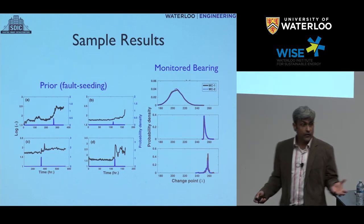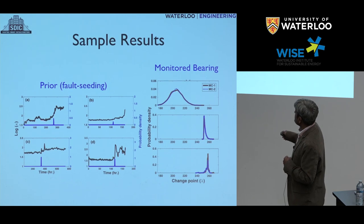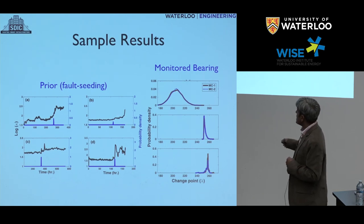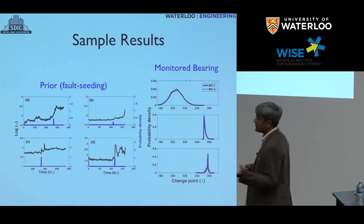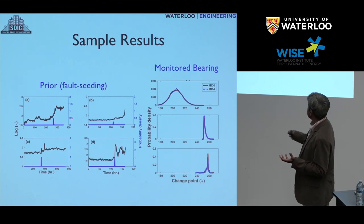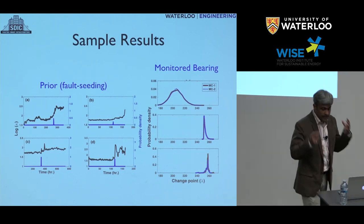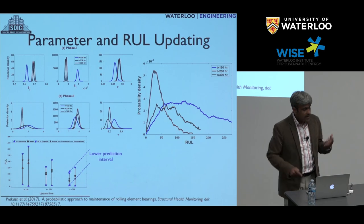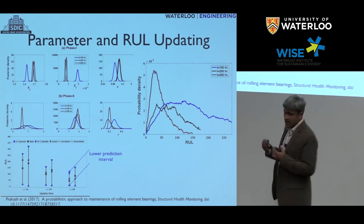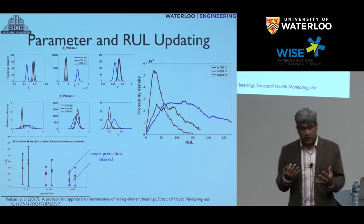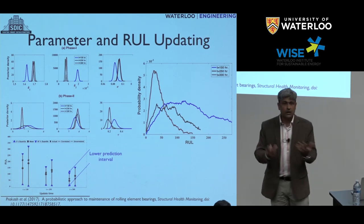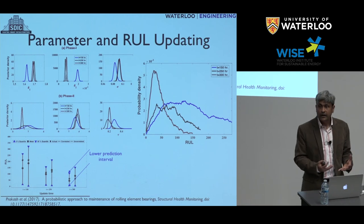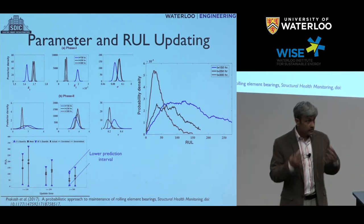We have an automated way to select which portions of the data contain damage-sensitive features, and from those features we can now do fault modeling. This is our environment model — how it looks from those features. Once you have a feature-based environment model established, you can parameterize these models using random variable models, stochastic gamma process models, Wiener process models, and so on. Once you have parameterized these things, you use those parameter estimates to calculate the remaining useful life. We have looked at correlations and sensitivities of different features, looking at correlations between different phases of the model.